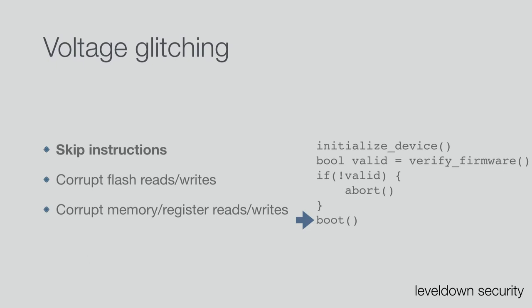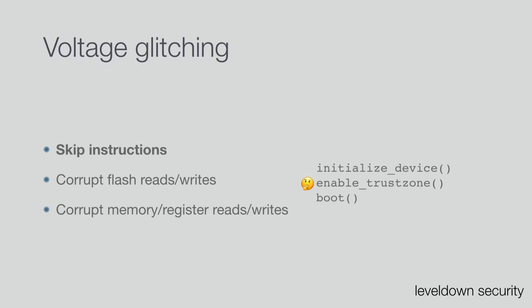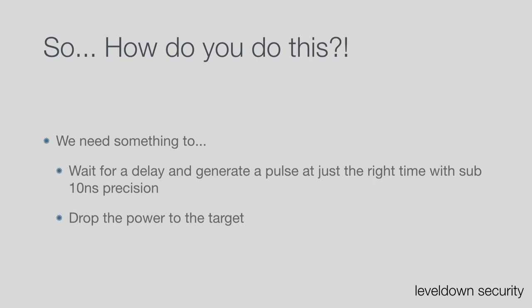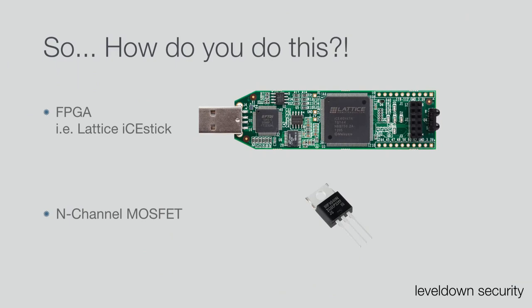How does this relate to TrustZone? If we manage to glitch over the enable-TrustZone instruction, we might be able to break TrustZone. To do this, we need something to wait for a certain delay and generate a pulse at just the right time with very high precision — we're talking nanoseconds. An FPGA works very well for this. The code I'll release runs on the Lattice iCEstick, which is roughly 30 dollars, and you need a cheap MOSFET — so together this is about 31 dollars of equipment.